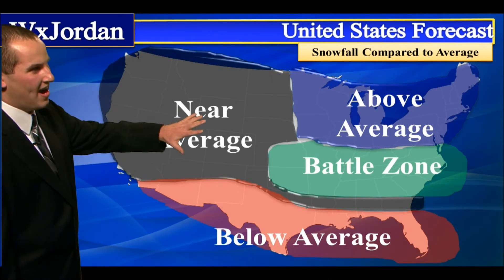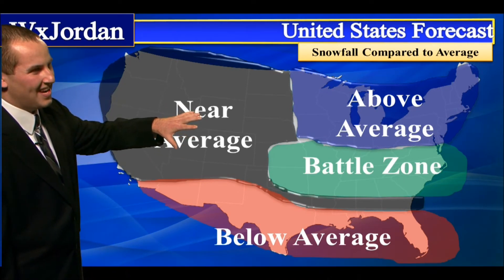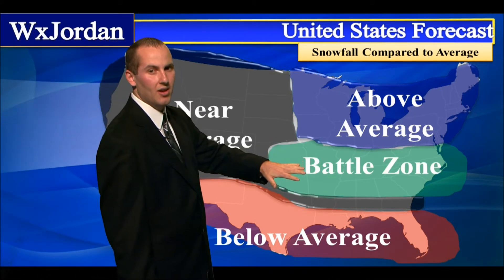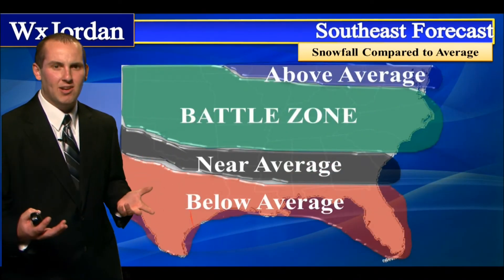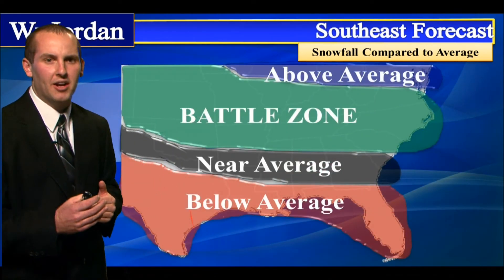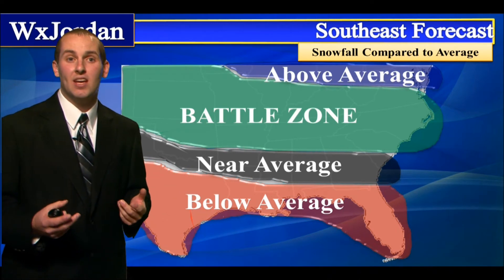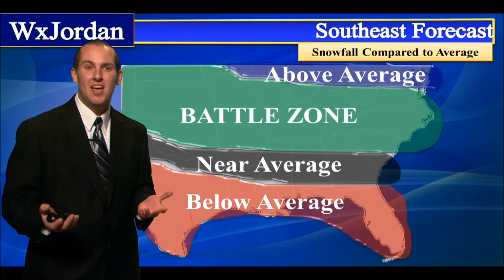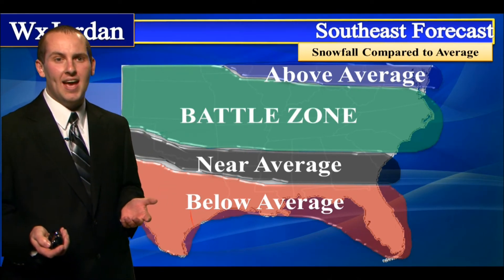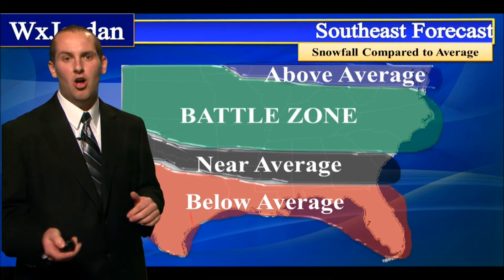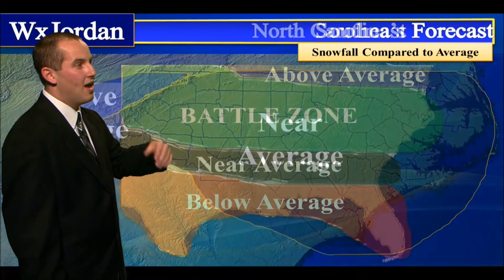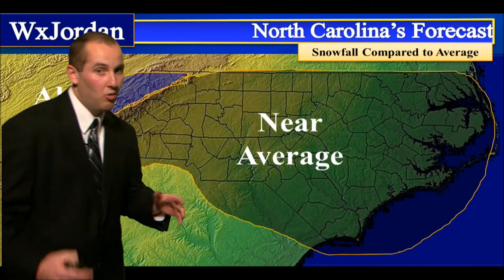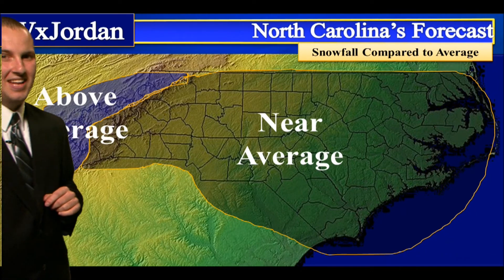For snowfall across the United States: near average in the Western US, below average in the South. We're going to be in a battle zone here in the Southeast and Mid-Atlantic. What does that mean? There'll be a lot of warm air and cold air colliding, and anytime that happens, we can get just one big snowstorm that gives us our whole entire seasonal average in one event. So it's really hard to forecast above average or below average snow — we're just kind of in that battle zone. While I do think we will see snow, we may not see a whole lot of it, so we'll go with near average. Above average in the mountains.